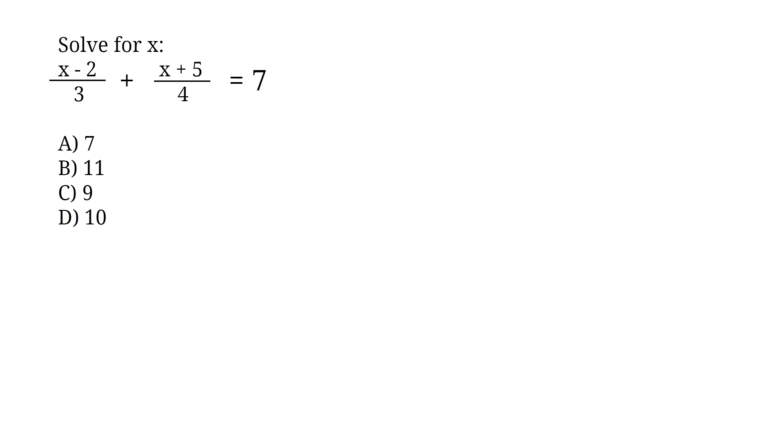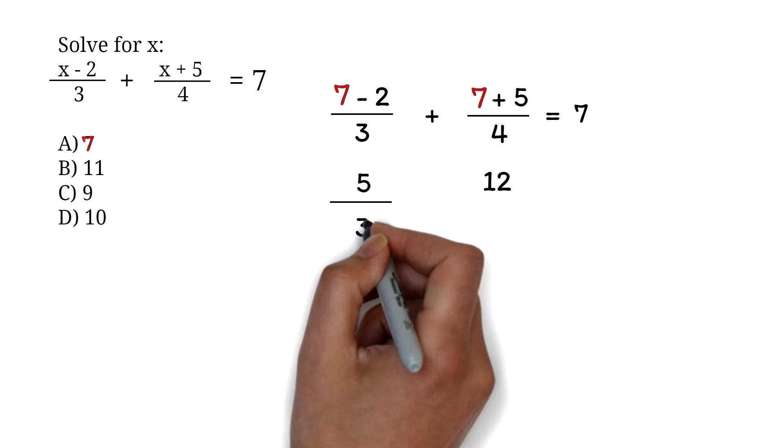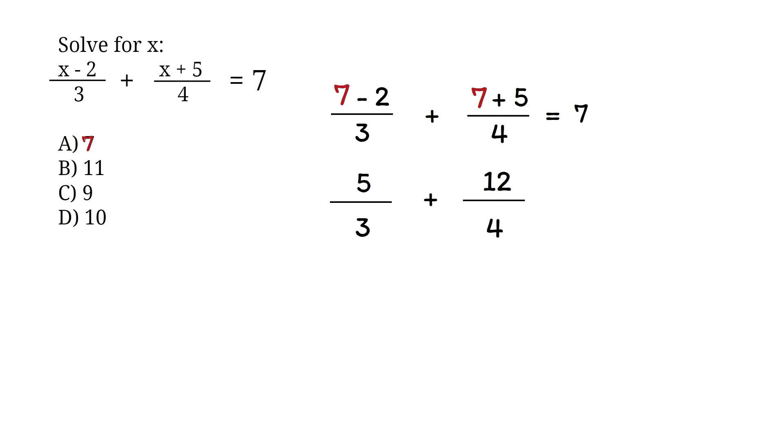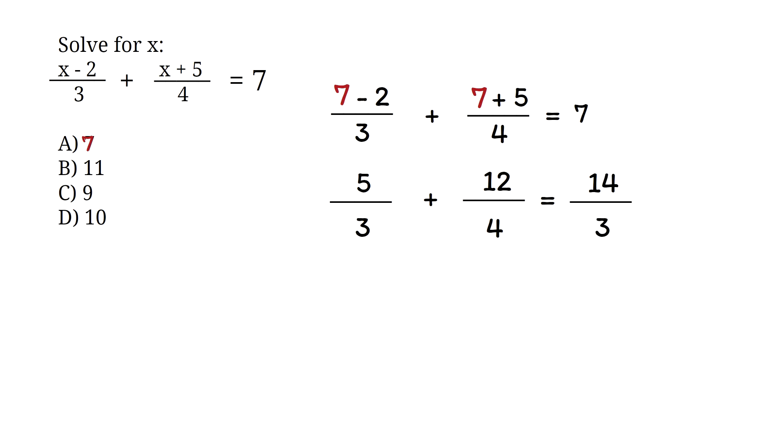The best way to solve this question is to replace the x with the options in the multiple choice answers and find out which value is true. Let's start with 7. We have 7 minus 2, which is 5. Then we have 7 plus 5, which is 12. We have 5 over 3 plus 12 over 4. You add this on the calculator to get 14 over 3. This is not 7. So option A is wrong.